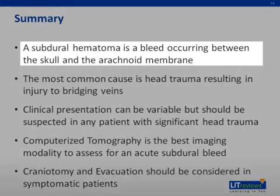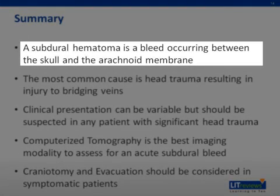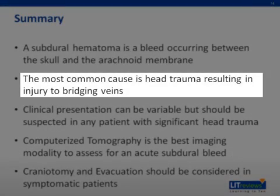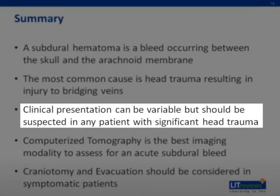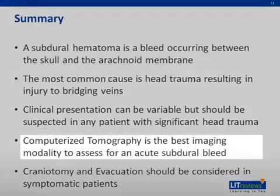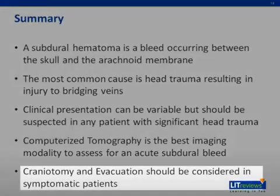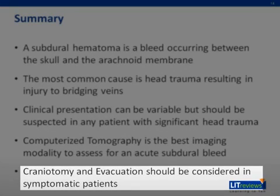In summary, a subdural hematoma is a bleed occurring between the dura mater and the arachnoid membrane. The most common cause is head trauma, resulting in injury to bridging veins. Patients with significant cerebral atrophy, such as the elderly and chronic alcohol users, are at the greatest risk. The clinical presentation can be variable, but a subdural hematoma should always be considered in a patient presenting with significant head trauma. CT is a sensitive and fast way to detect an acute subdural hematoma. Management of intracranial pressure is essential, and ultimately the patient may require surgery to remove the bleed.